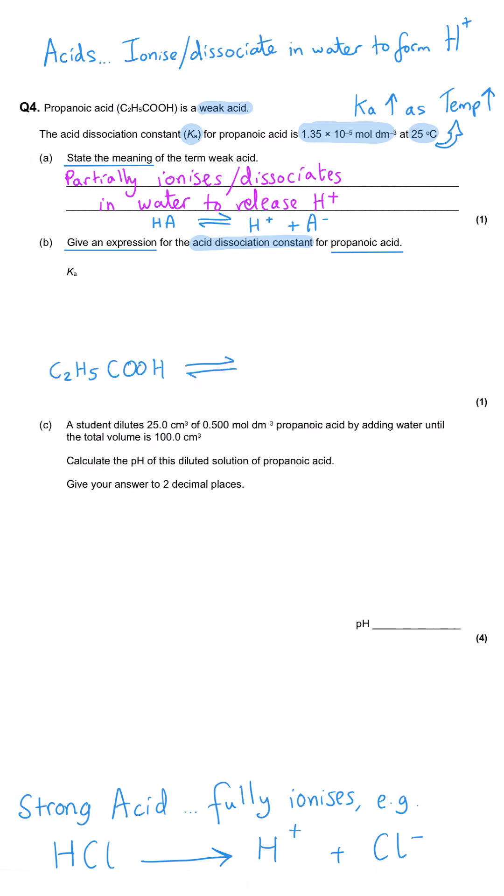So, propanoic acid has got this formula. When it dissociates, we make H+, and we make the C2H5COO- ion. So, the Ka expression has got the two product concentrations on the top. They are multiplied together, divided by the reactant concentration. And that's what those square brackets are representing, remember.